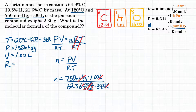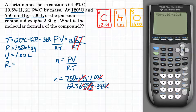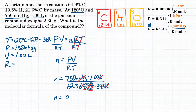Now let's use the calculator: 750 multiplied by 1.00, divided by the quantity 62.36 times 393. Rounding to three significant figures, we get n equals 0.0306 moles.